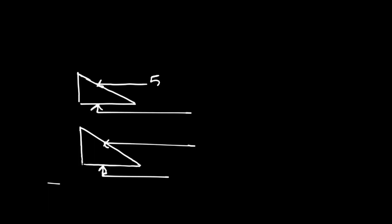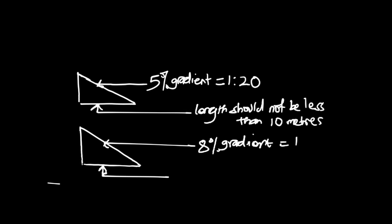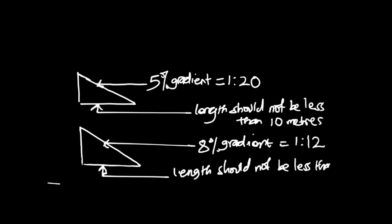If the plan or drawing recommends a gradient of 1 in 12, it means the length of the ramp should not be less than 2 meters. If the plan specifies a 5% gradient, it means the length should not be less than 10 meters — this is the same as 1 in 20.